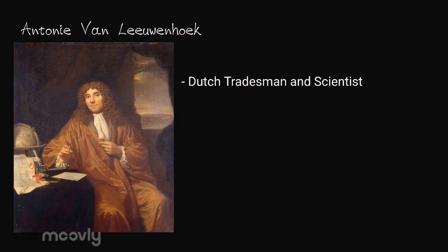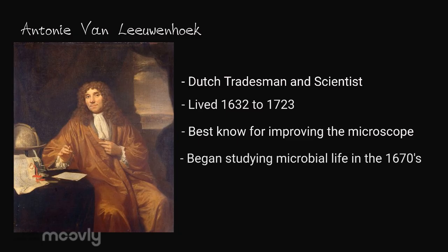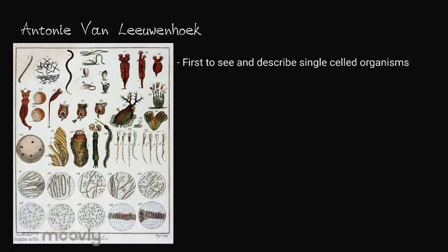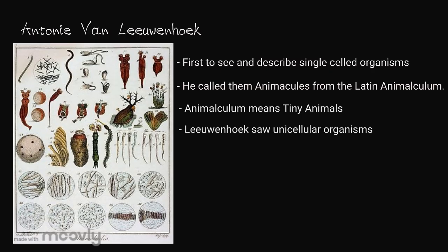Antony van Leeuwenhoek was a Dutch tradesman and scientist that lived from 1632 to 1723. He is best known for his work to improve the microscope and began studying microbial life in the 1670s. He was the first to see and describe single-celled organisms. He called them animalcules, from the Latin animalculum, meaning tiny animals. We now refer to what Leeuwenhoek saw as unicellular organisms.